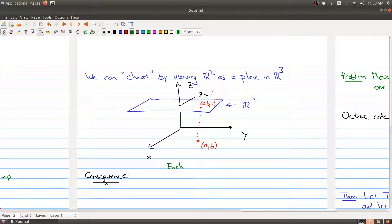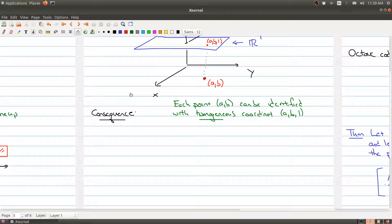Okay, so let's make this very clear here. Each point (a,b) can be identified with what we're going to call its homogeneous coordinate: (a,b,1).